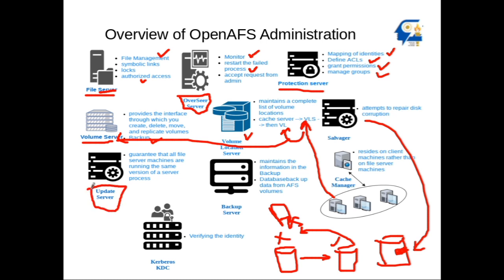The update server enables your network to host shared documents consistently by checking the version of software installed across all systems. Every system in the network should run the same version of the OpenAFS software to provide consistency. This guarantees all server machines run the same software version, which brings down a lot of problems.